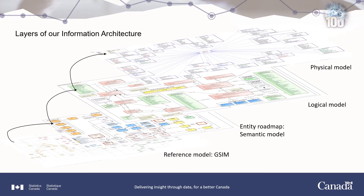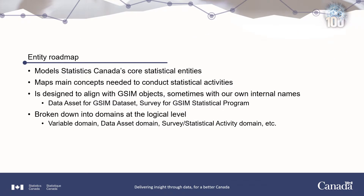The layers of our information architecture are based on the GSIM reference model. We built our semantic model, which we call the entity roadmap. It was in turn a reference model for implementing the logical models, on which the physical model was built. The entity roadmap models Statistics Canada's core statistical entities and maps the main concepts needed to conduct statistical activities. It is designed to align with GSIM objects, sometimes with our own internal names — for example, 'data asset' for GSIM dataset, 'survey' for GSIM statistical program. The entity roadmap is broken down into domains for the logical level, such as the variable domain and data asset domain.